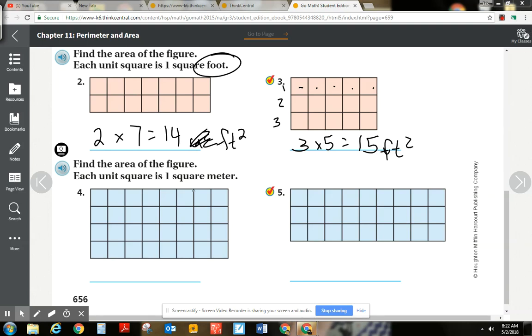Number four, you got to make sure that you're reading the directions here. So I see that I'm finding the area, and each one of these represents a meter. This is one, two, three, four. Four, four rows by one, two, three, four, five, six, seven, eight. Four times eight.